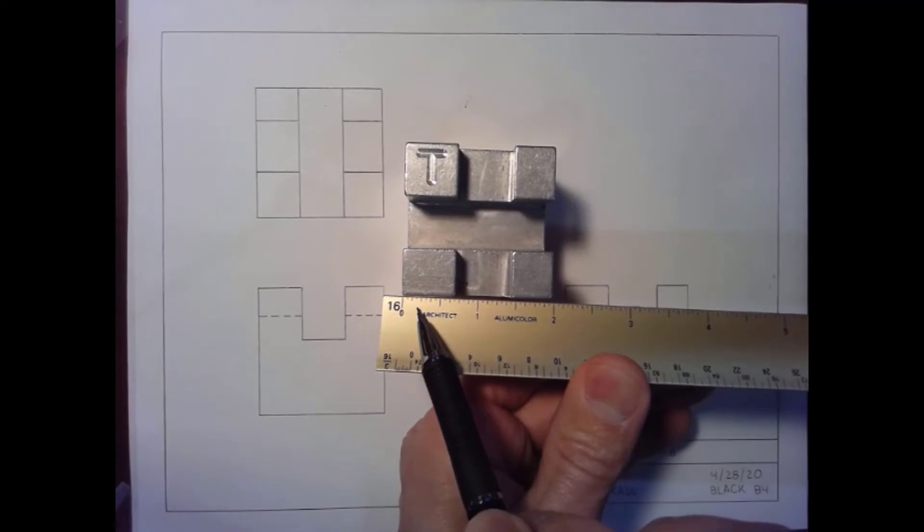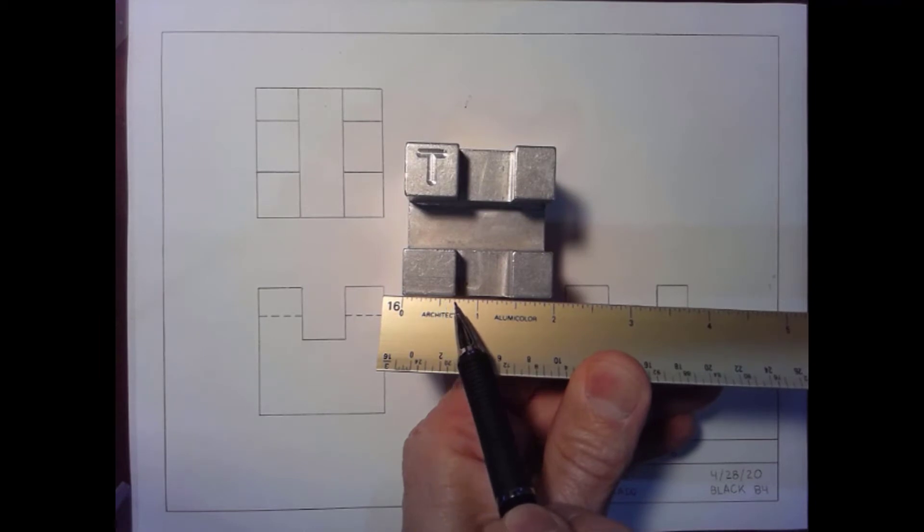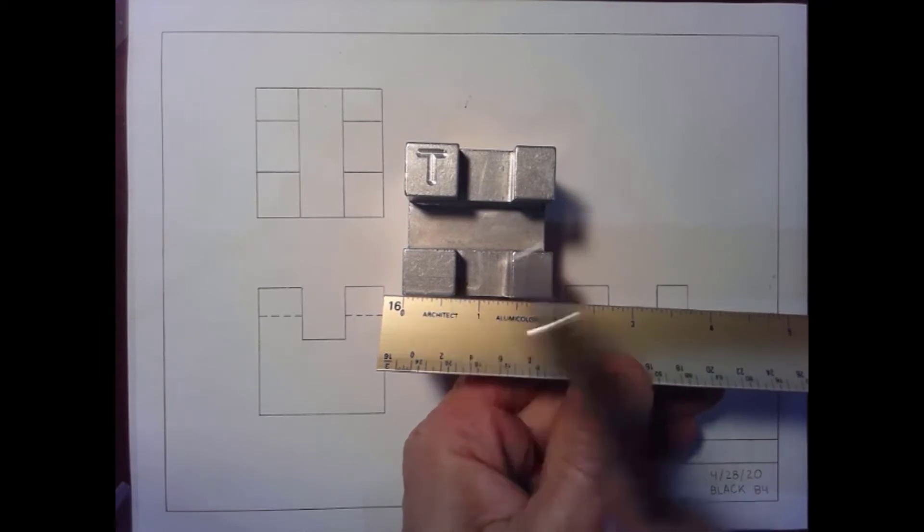To measure this section, we do the same. One, two, three, four, five, six, seven, eight, nine, ten, eleven. This measures eleven sixteenths.